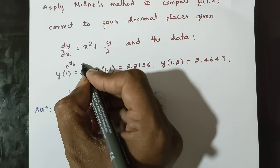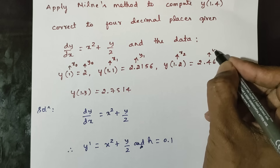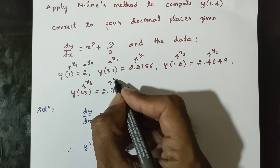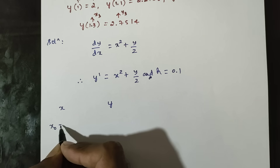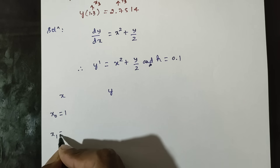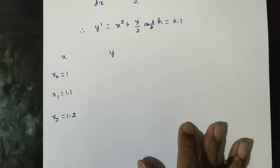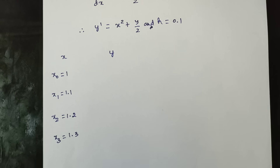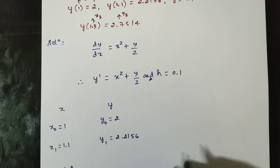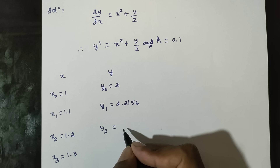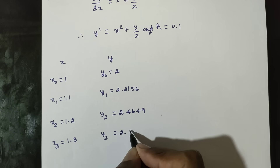Setting up the table: x0, y0, x1, y1, x2, y2, x3, y3. x3 is equal to 1.3, y0 is equal to 2, y1 is equal to 2.2156, y2 is equal to 2.4649, y3 is equal to 2.7514.